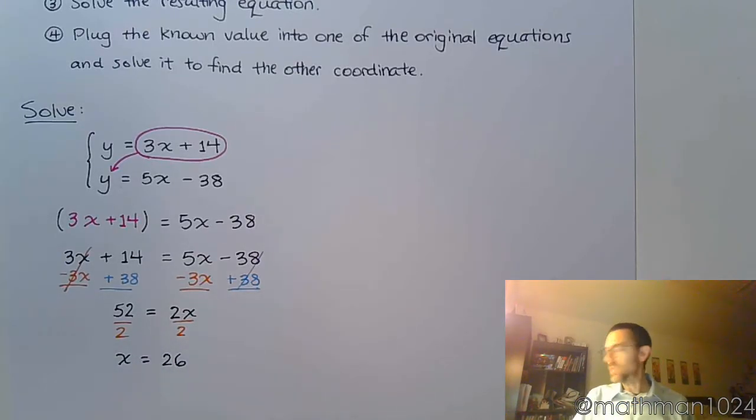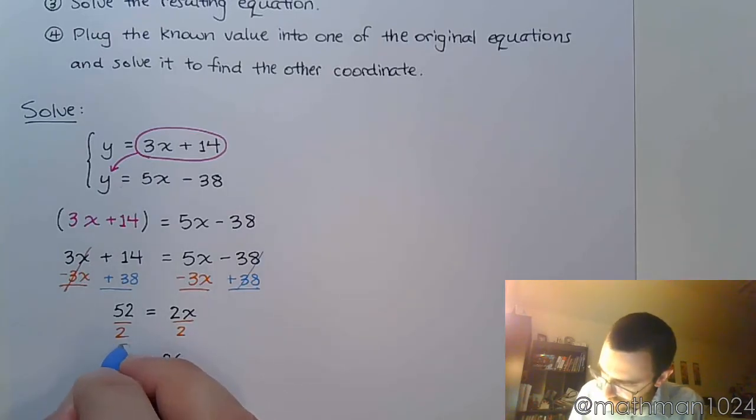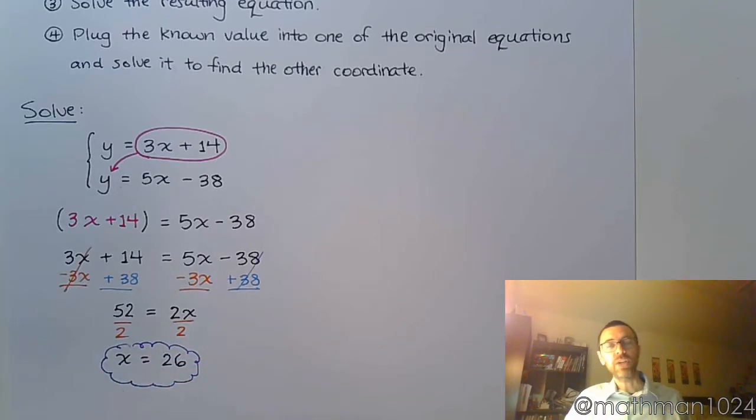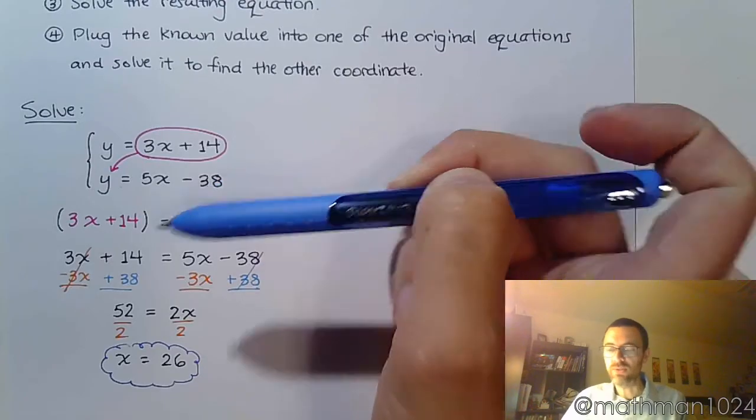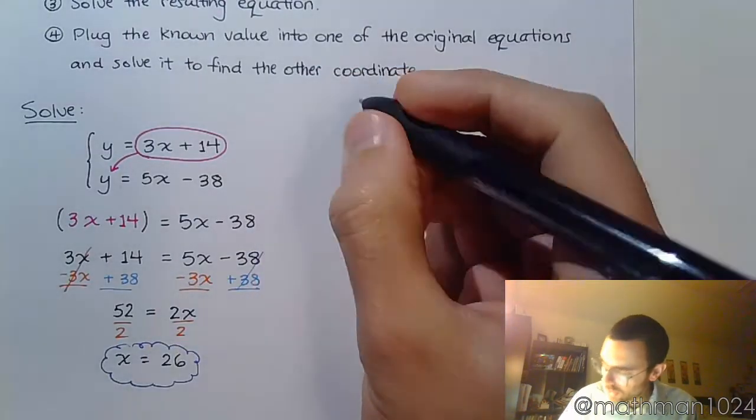Once we have that x equals 26, we need to understand that this is not my final answer. This is just part of my answer. As I mentioned at the top of the video, a solution is going to be an ordered pair that works for both of these equations, which means you have to find not just x, but you also have to find the y coordinate as well. Now that we know that x equals 26, we can plug it into either of these original equations to find y.